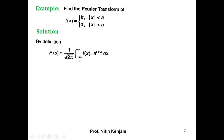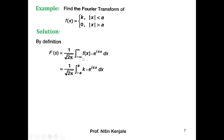The first part will be from minus infinity to minus a, the second part will be from minus a to a, and the third part will be from a to infinity. So f of x will take value zero in the first and the last intervals — that is, from minus infinity to minus a and from a to infinity — so the integral in these two intervals will be zero. We will be left with only the integral with limits minus a to a, where f of x takes value k.